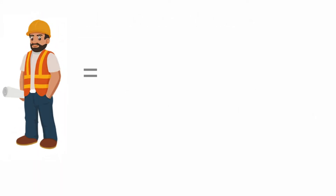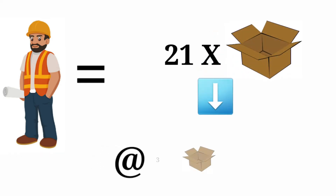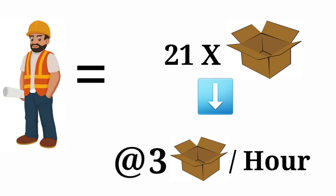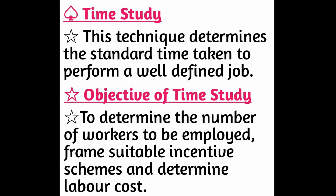So he will produce 21 boxes at the rate of 3 boxes per hour. Now, to determine the number of workers needed: if the daily production target is 2100 boxes, 100 employees will be required — 21 into 100 equals 2100 boxes. This also helps in making a suitable incentive plan; workers who meet the standard target of 21 units will be paid accordingly.